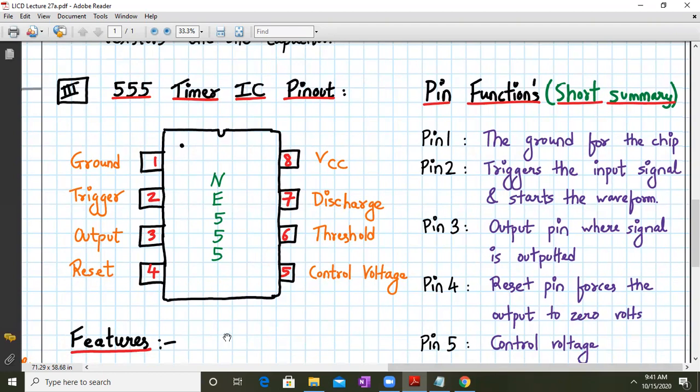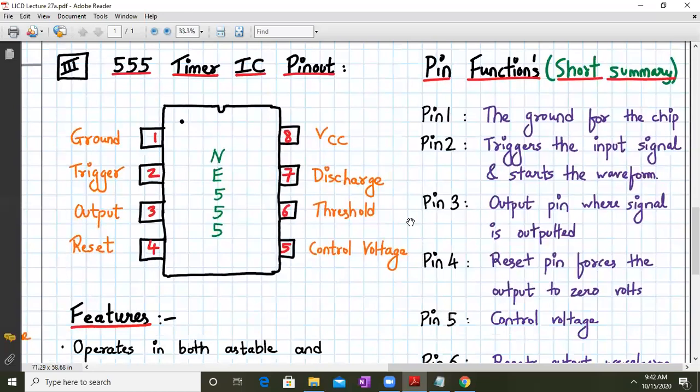So the pin, it is an eight pin DIP. That is dual in line. And pin number one is ground. Pin number two is trigger. Pin number three is output. Pin number four is reset. Pin number five is control voltage. Six is pin number six is threshold. Pin number seven is discharge. And pin number eight is my supply voltage. That is VCC. So normally we operate VCC around in the voltage of five volts to zero. Okay. And ground being the zero.